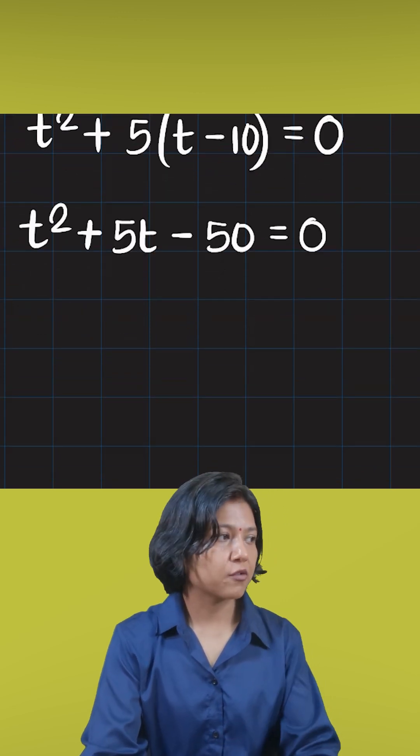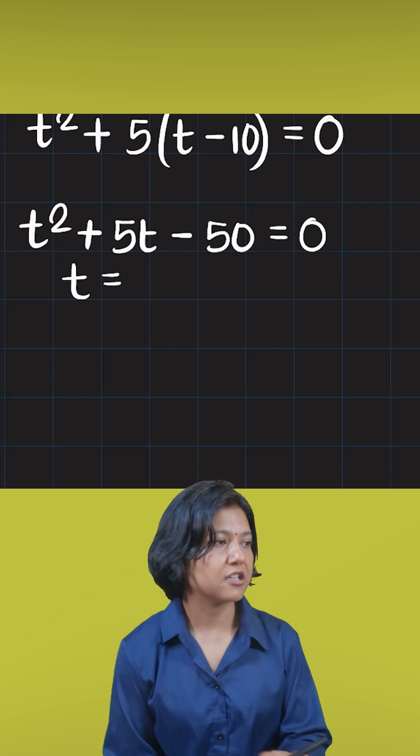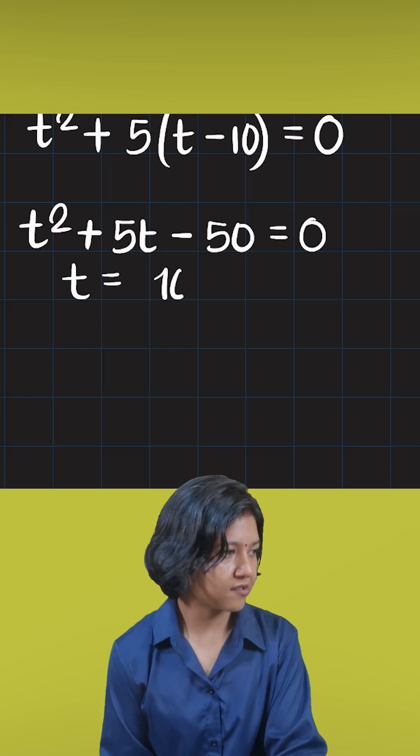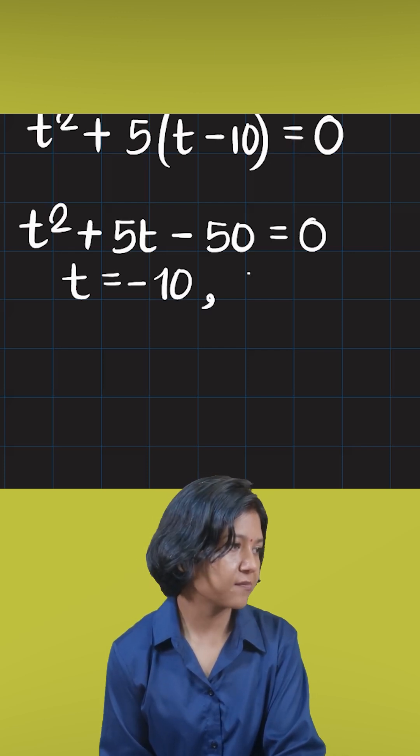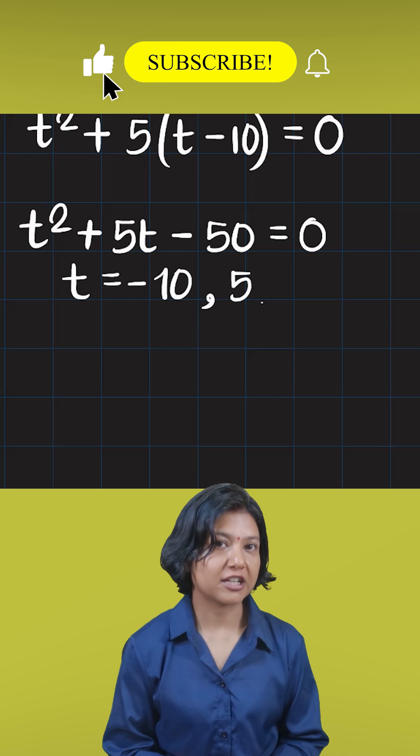Assuming that you already know how to solve a quadratic, we'll get two values of t here. One I'll get is minus 10, and the other one I get is positive 5.